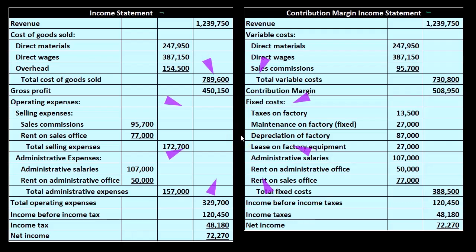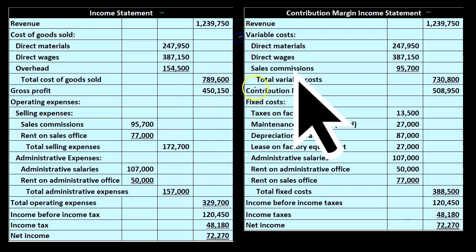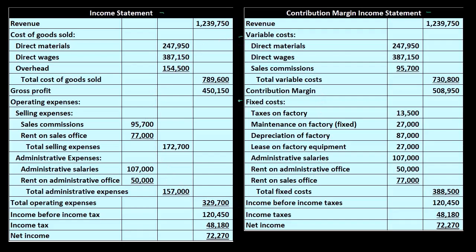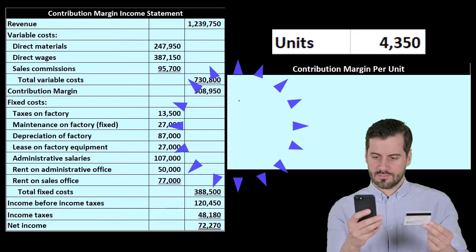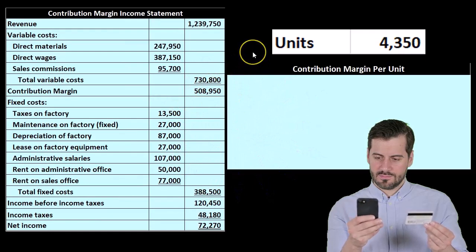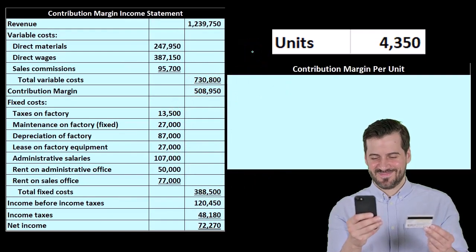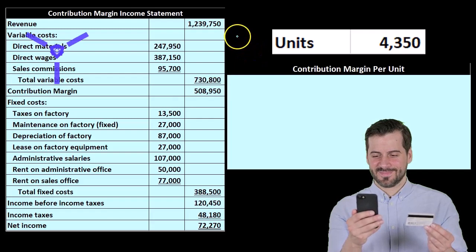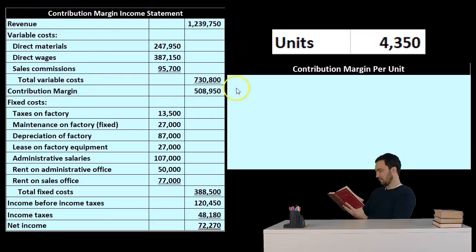So what can we do with this contribution margin income statement? First, we have to create it, which means breaking costs out into variable costs and fixed costs and reformatting the information. That takes some work. The benefit is that we can take this income statement and break it down to a per-unit type of income statement — getting to the sales, variable costs, and contribution margin per unit — and then use this information to make projections much more easily.